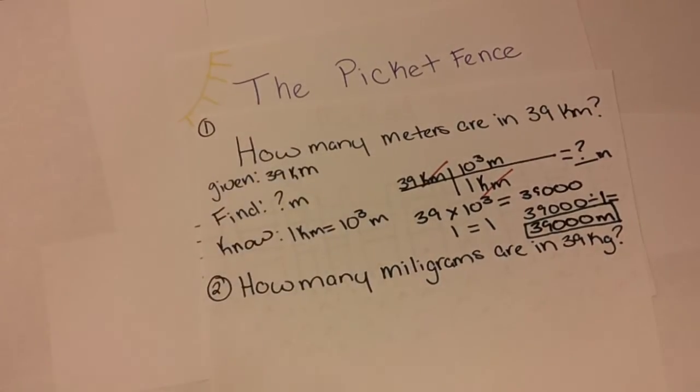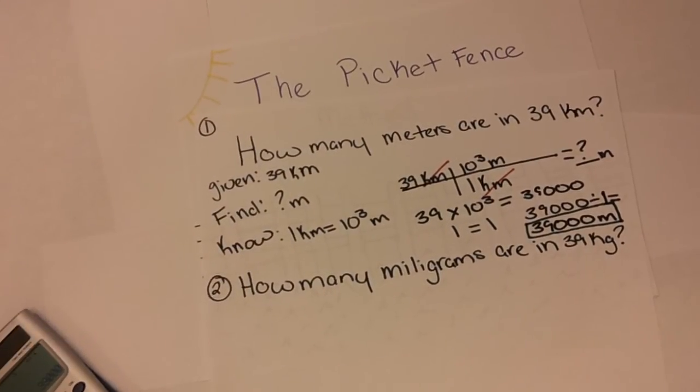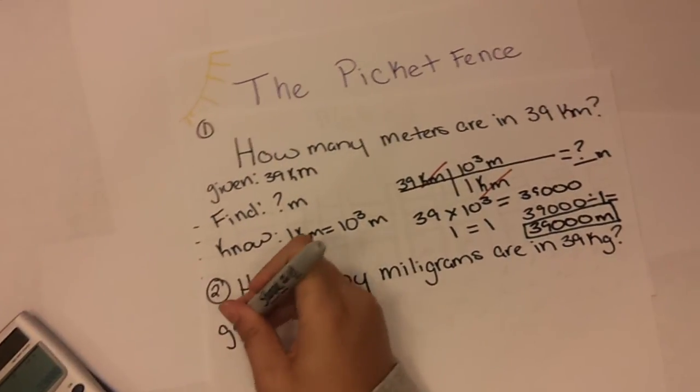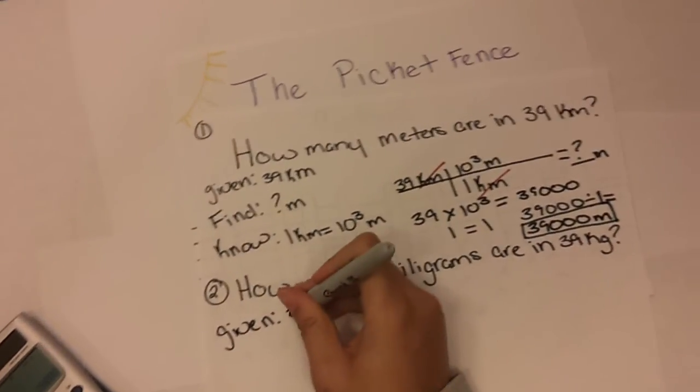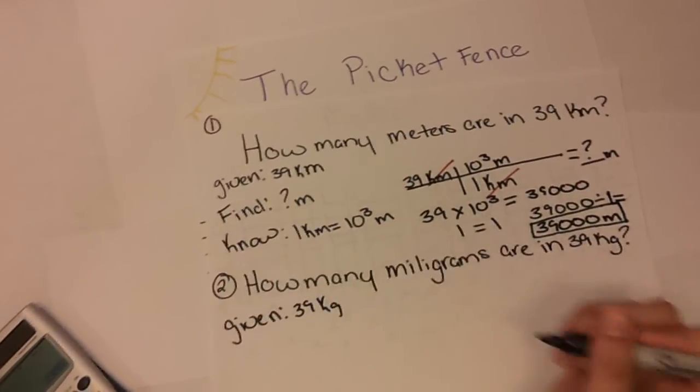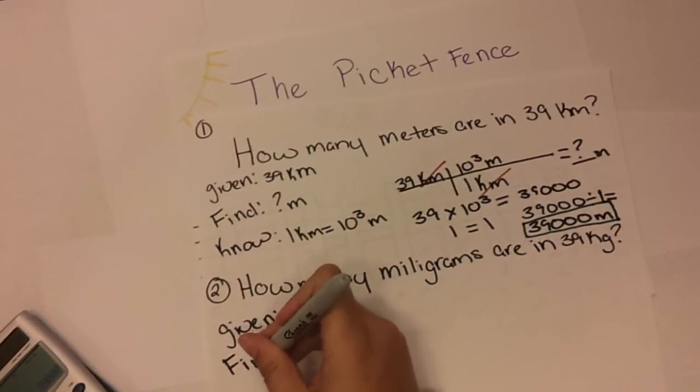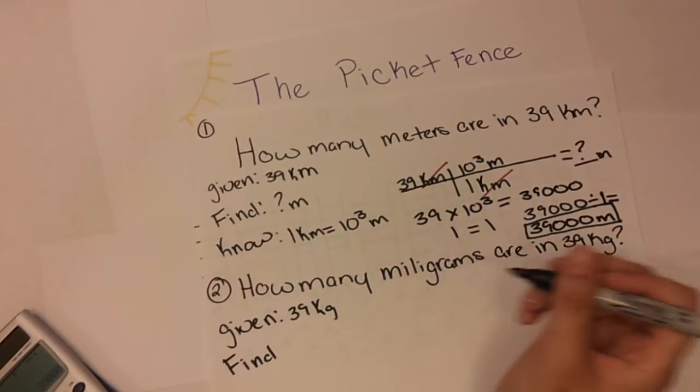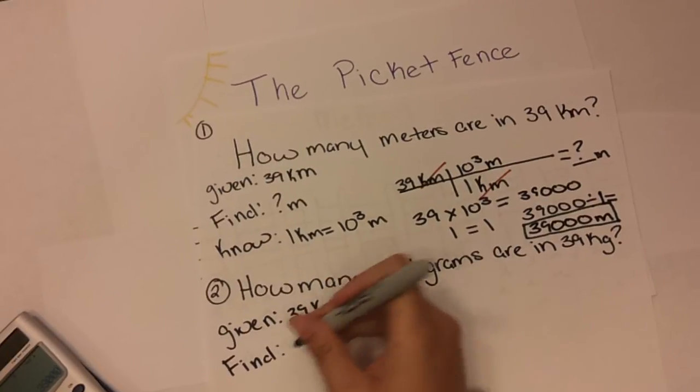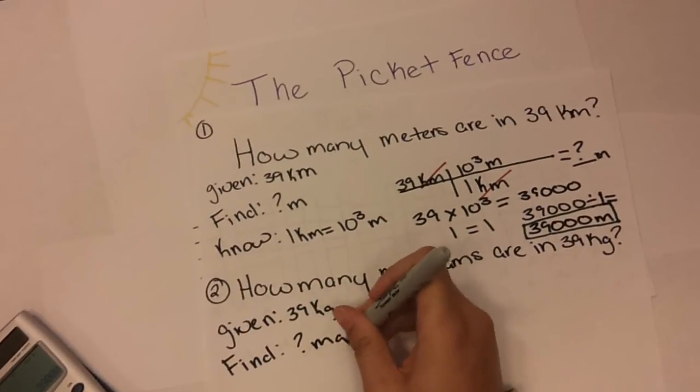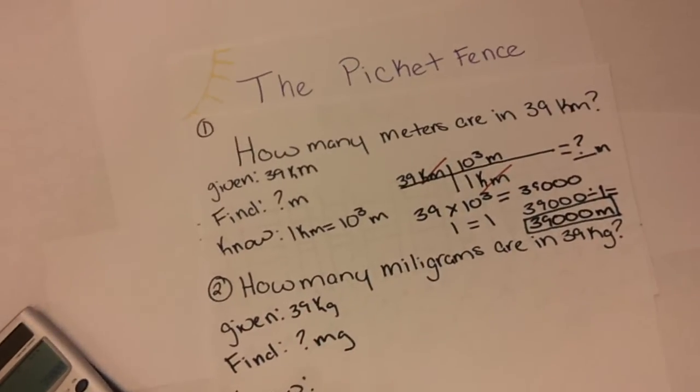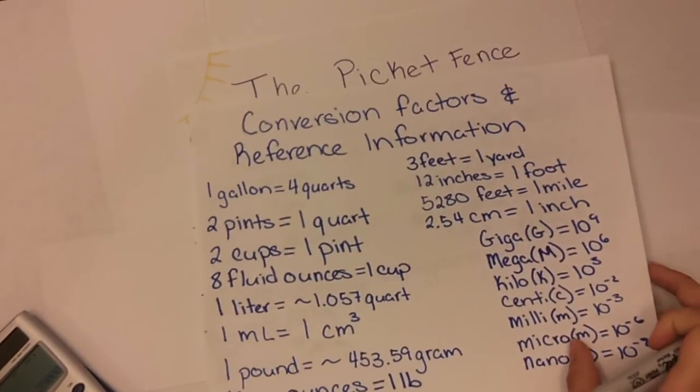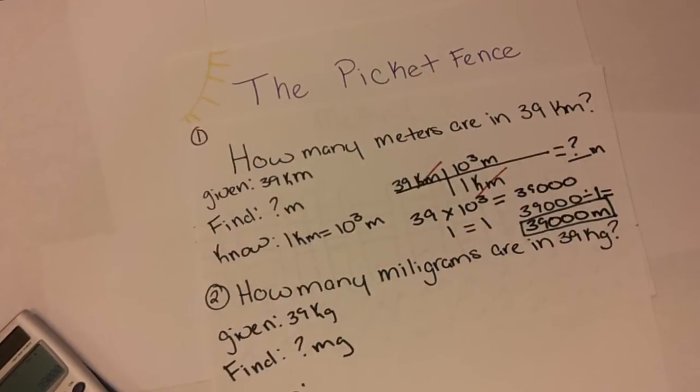For the second example, we're going to do how many milligrams are in 39 kilograms. So we have the given information which is 39 kilograms, and we want to find milligrams.